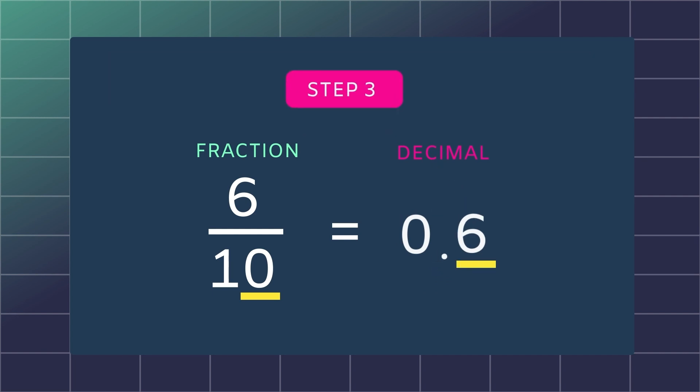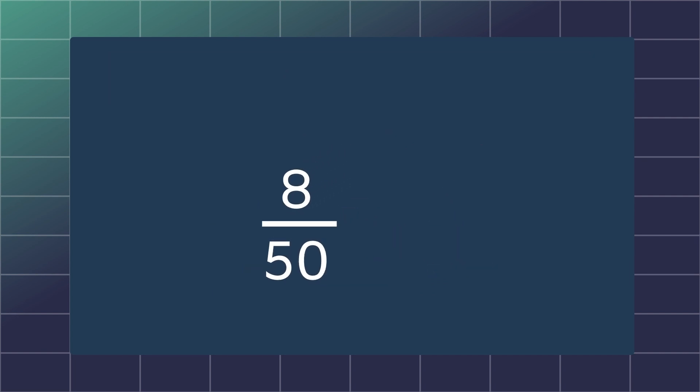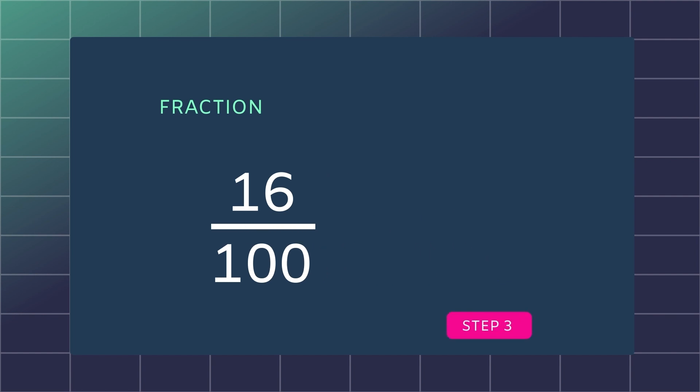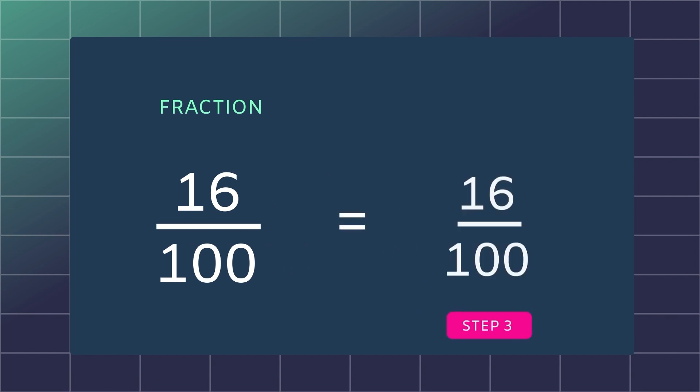Here is another example to try: 8 fiftieths. Remember the steps. Step 1: change the denominator to a base 10 by multiplying 50 by 2. Step 2: what you do to the bottom, you must do to the top, so multiply your numerator by 2 as well. Step 3: your new fraction will be 16 one hundredths. 16 one hundredths equals 0.16.